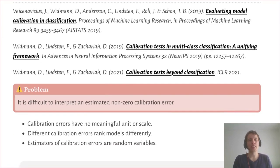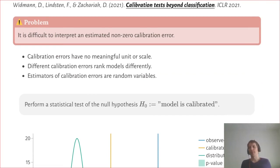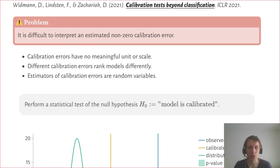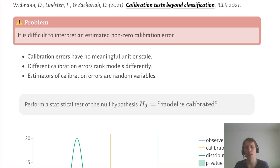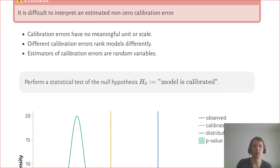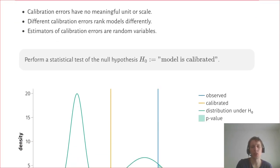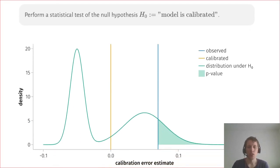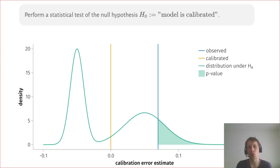I quickly go over a Gaussian process example with some training and validation data, where the marginal predictions are normal distributions. We can use a kernel suited for Gaussian distributions — for example, the 2-Wasserstein distance for measuring distance between Gaussian distributions — and then evaluate the kernel calibration error for such models. One general problem with all calibration errors is that it's difficult to interpret the values. It's unclear if a value of 0.01 indicates the model is almost calibrated or completely uncalibrated, and there's no clear scale. Different calibration errors also rank models differently, and even for calibrated models, estimates from finite data sets are usually non-zero.